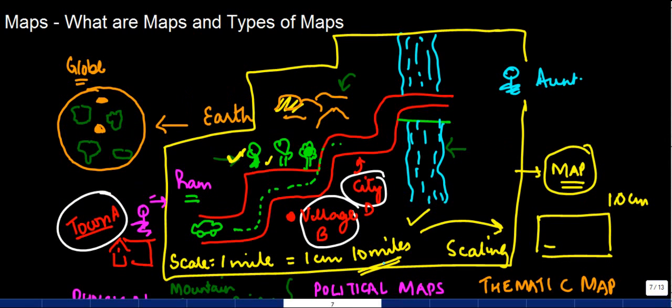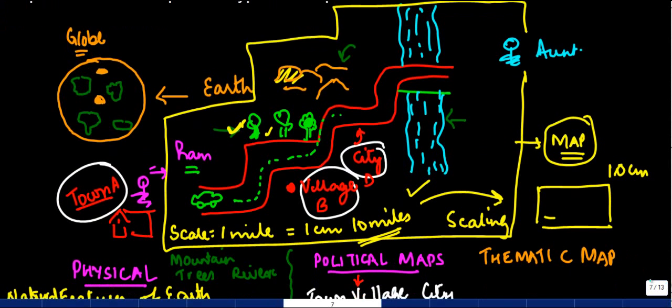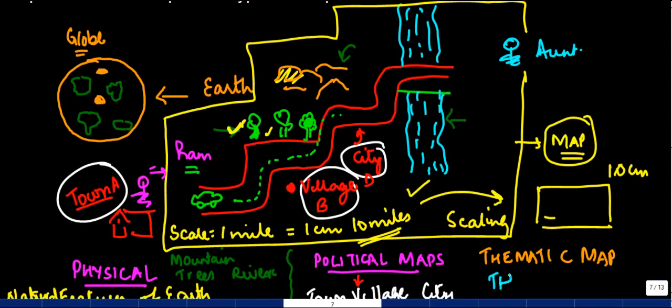So these are the thematic maps showing a particular theme, let's say rainfall. It could be roads or any other thing. Themes is what thematic map shows. I hope you would have understood this particular thing.